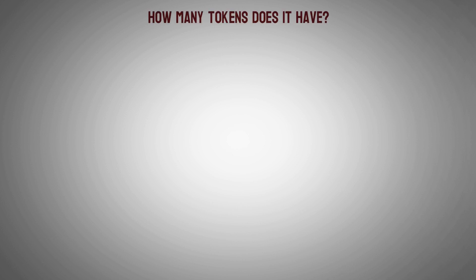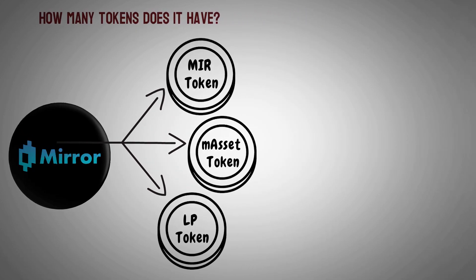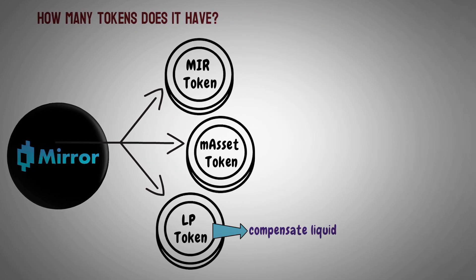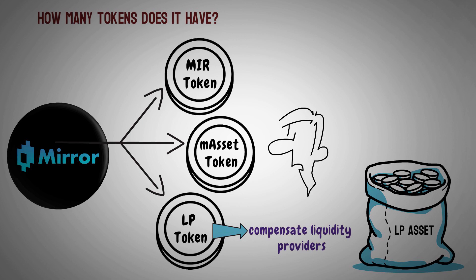How many tokens does it have? The Mirror Protocol has three tokens: the MIR token, the M-asset token, and the LP token. First, the LP tokens are used to compensate liquidity providers for their contributions to the M-asset-UST or MIR-UST pools. Each pool is connected with a distinct LP asset that cannot be mixed with LP assets from other pools. As a unit of account, the asset represents the pool's liquidity provider's stake in the pool.